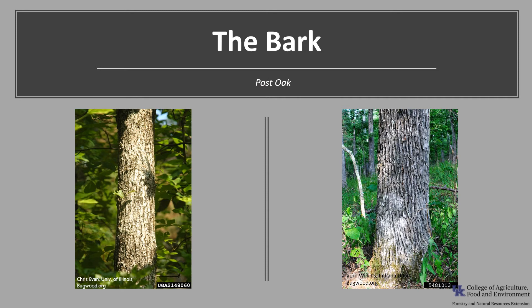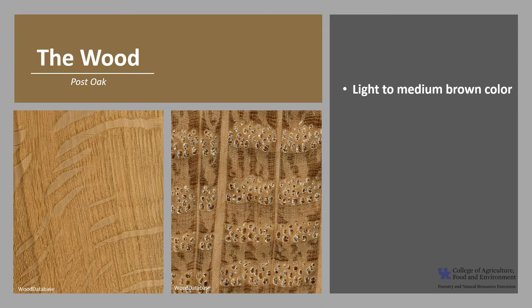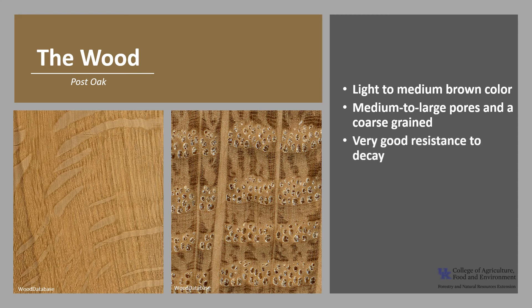The bark of post oak is ashy gray and initially quite scaly, but as the tree ages it becomes more blocky with ridges. Overall, the bark looks pretty similar to white oak. The wood is light to medium brown in color, though there can be a fair amount of variation. It has medium to large pores and is fairly coarse-grained.